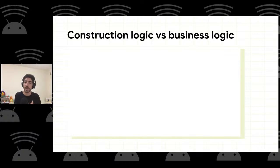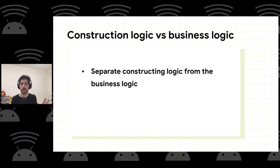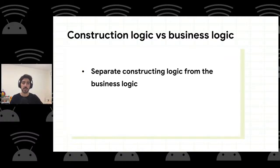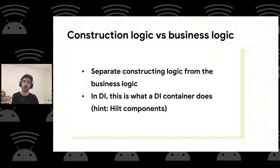This gives rise to what's called construction logic — all the logic in your app only meant to create other classes — versus business logic, which is what makes your app valuable. You need to separate these two, and in dependency injection there's a dedicated class responsible for the construction logic: the dependency injection container, which maps to a component in Hilt.